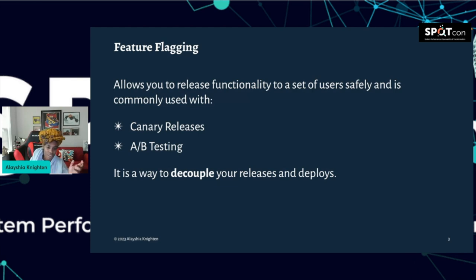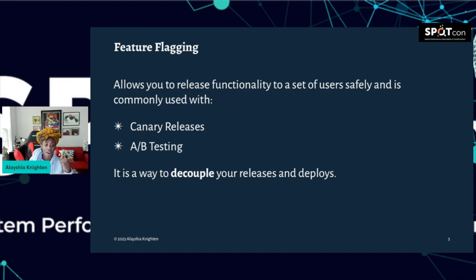A term I hear all the time is 'boring deploys' — they're so easy to do and so frequent, and that's what you want. But as you're pushing out constantly, your users don't want that. Who wants to log in constantly seeing a changing system in a non-meaningful way? If a user logs in and the button has changed 75 times in a week, that's mentally exhausting and visually nauseating. Putting things behind feature flags allows you to safely deploy, make certain decisions, and target the people you actually want to target.